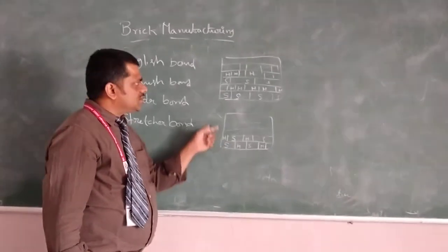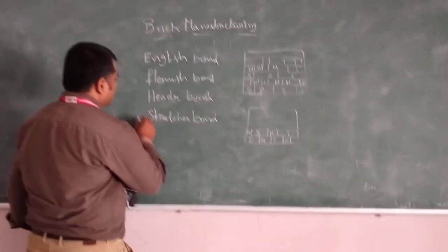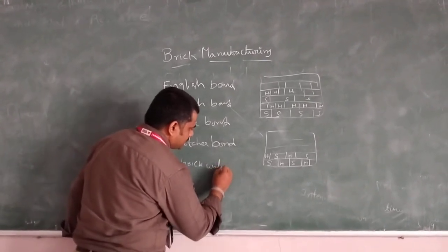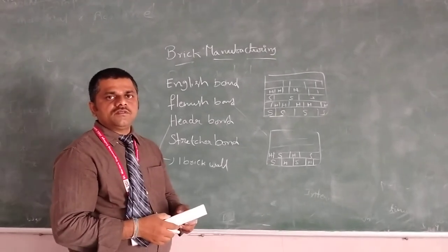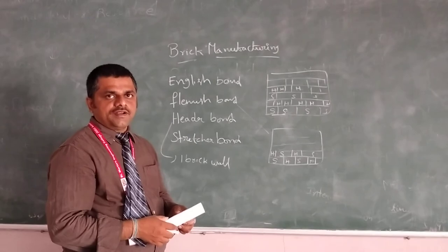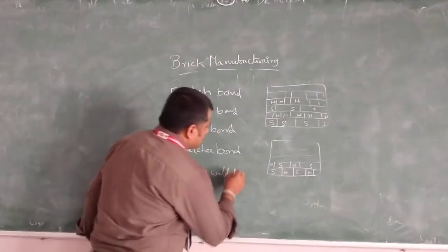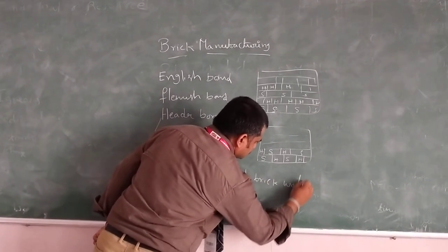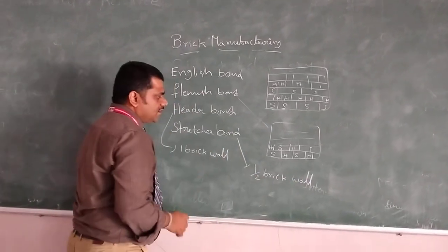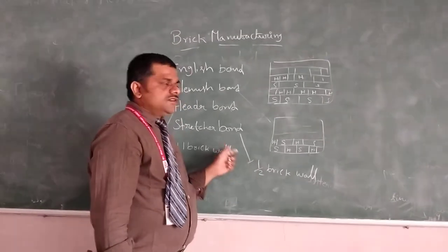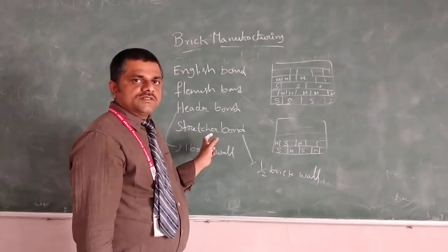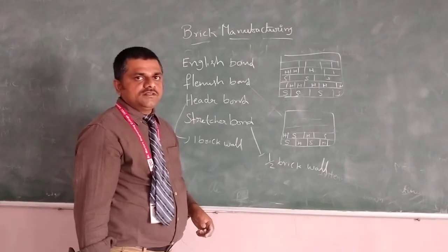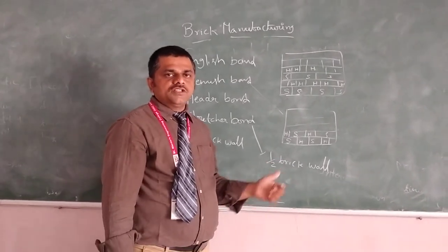Header bond is arranged in different curves around one brick thickness. One brick thickness, it is nothing but header bond. Next, stretcher bond is half brick, half brick wall. There are different types of bond systems. In exams, this is very important. Header bond, stretcher bond, Flemish bond, and English bond. English bond is the strongest bond.